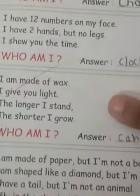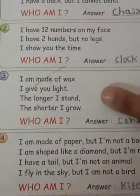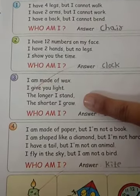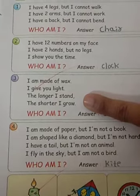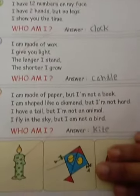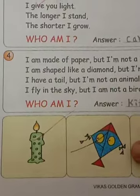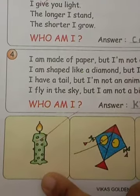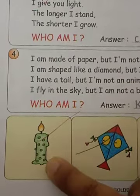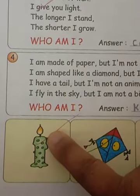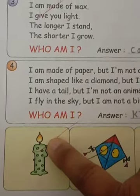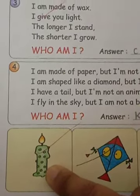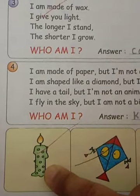See the next one. I am made of wax. I give you light. The longer I stand, the shorter I grow. Now these 2 options are hidden, so 2 are remaining. The answer is candle — made up of wax, it gives us light. Especially whenever there is no light at night, we rely on the candle.